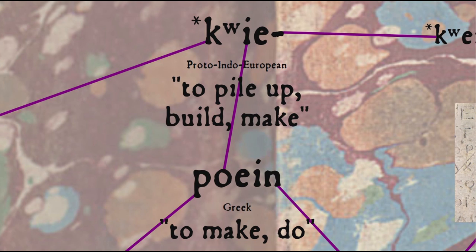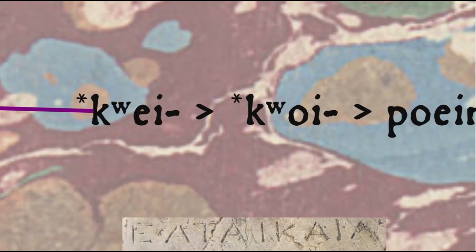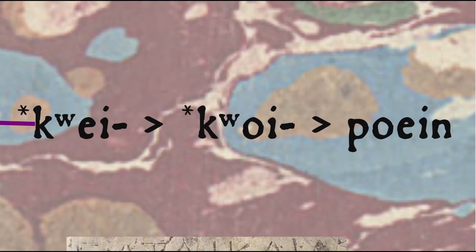The sound change at the beginning may seem a little odd, but it's perfectly regular. The stem vowels in Proto-Indo-European change in what's called ablaut or vowel gradation, so the O-grade form of kwe is kwoi, and the kwo sound, a labialized voiceless velar stop, regularly becomes a voiceless bilabial stop in Greek when occurring before a back vowel.